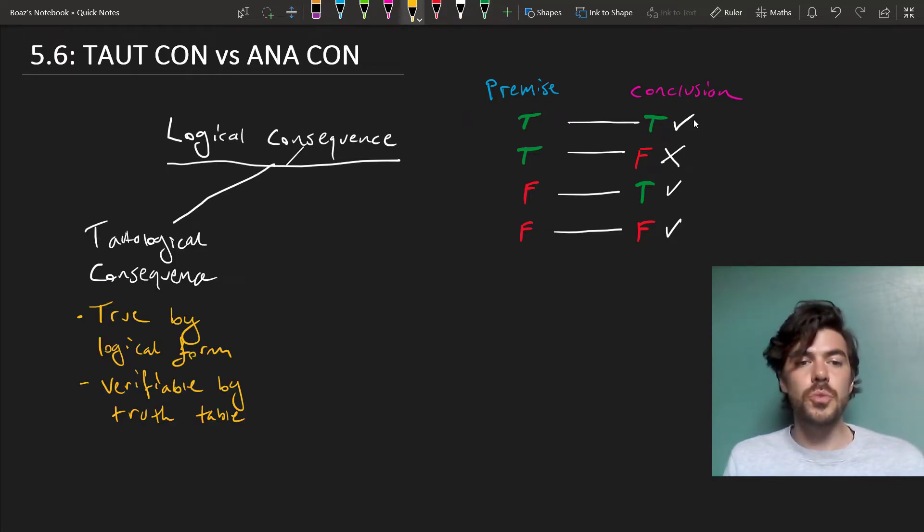Tautological consequences are true by their logical form, which is to say they're true in virtue of the meanings of the logical symbols they incorporate, symbols like AND, and NOT, and OR, and as a result of this, they're verifiable in truth tables.